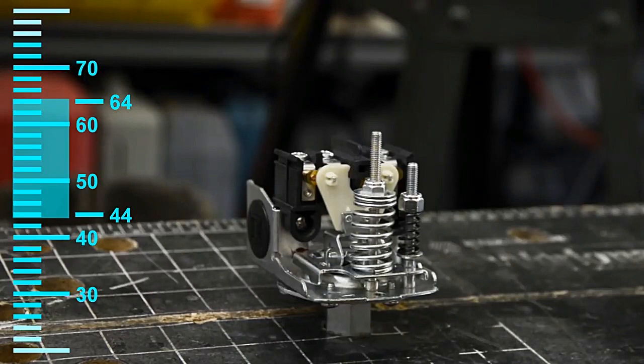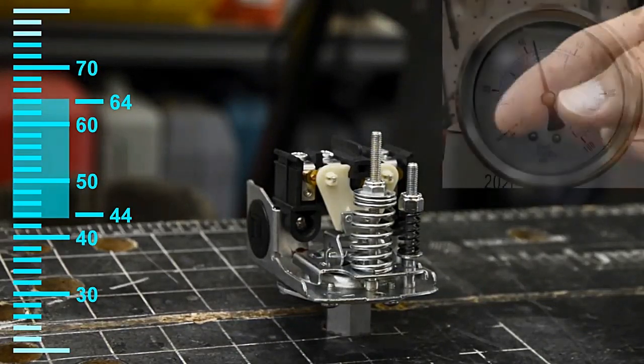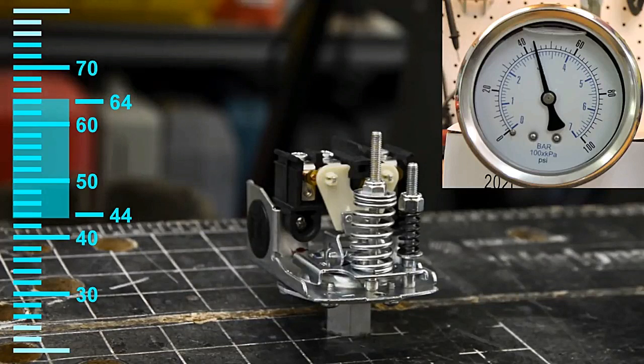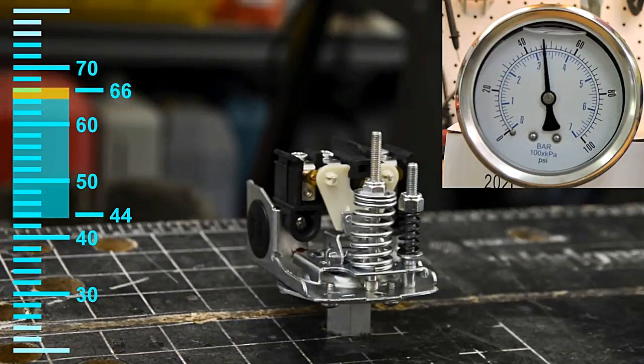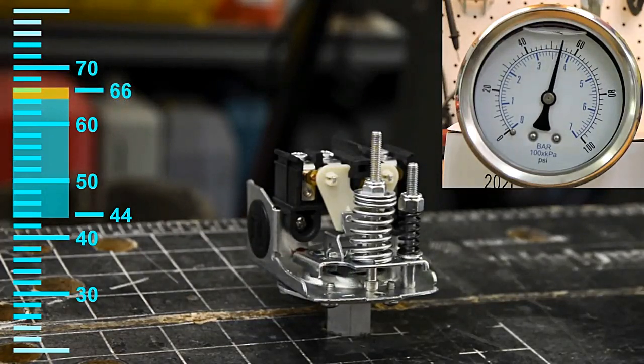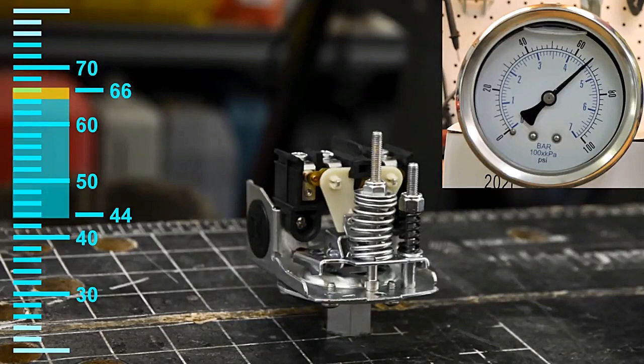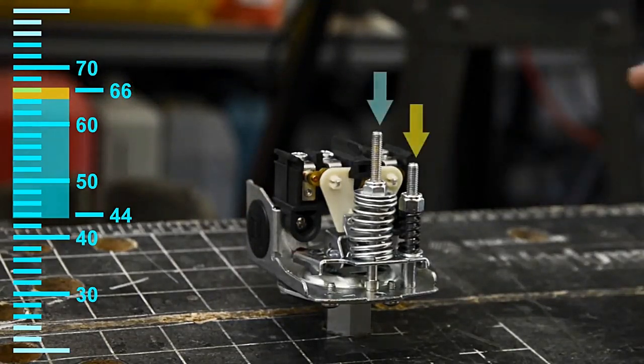And this time we'll see what the cutoff when the contacts open is going to be. 60, two, four, five, six. We raised it up some more. So that's what these adjustments do.